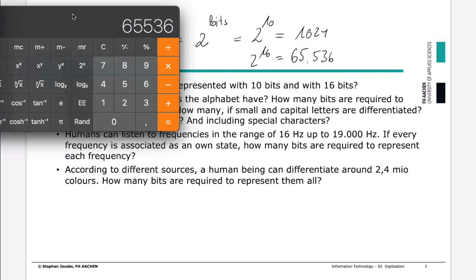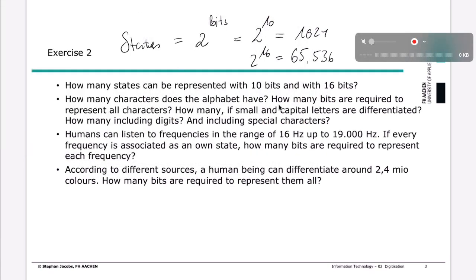Sometimes the question is just the other way around. So how many characters does an alphabet have? And how many bits are required? And then we can start again. Okay, alphabet, the usual alphabet, starting with a, b, c, ending up with x, y, that has 26 characters.